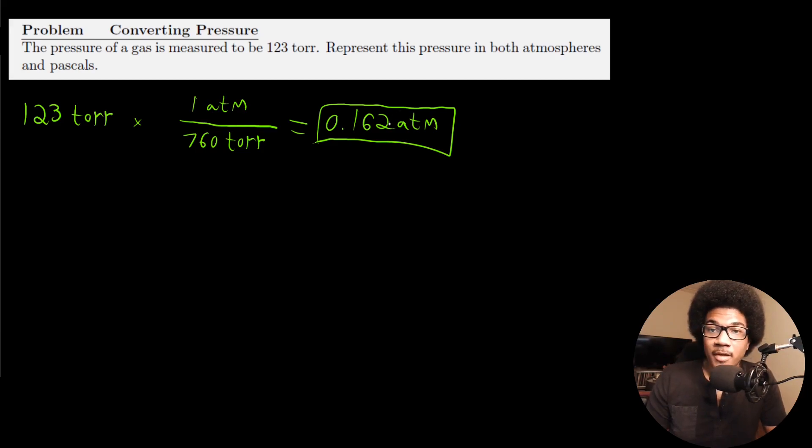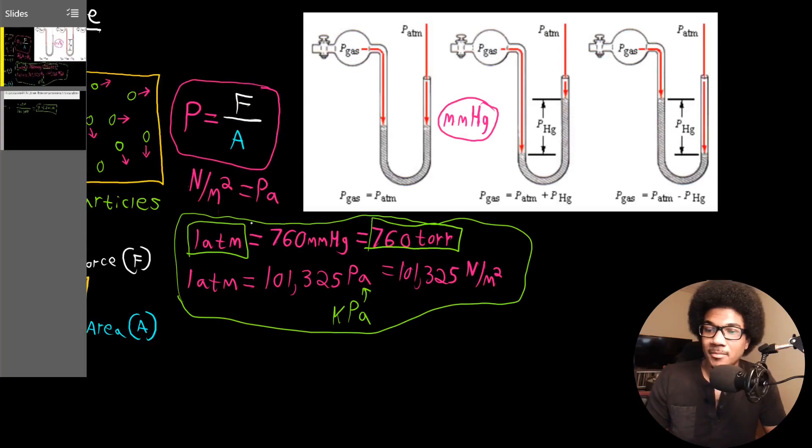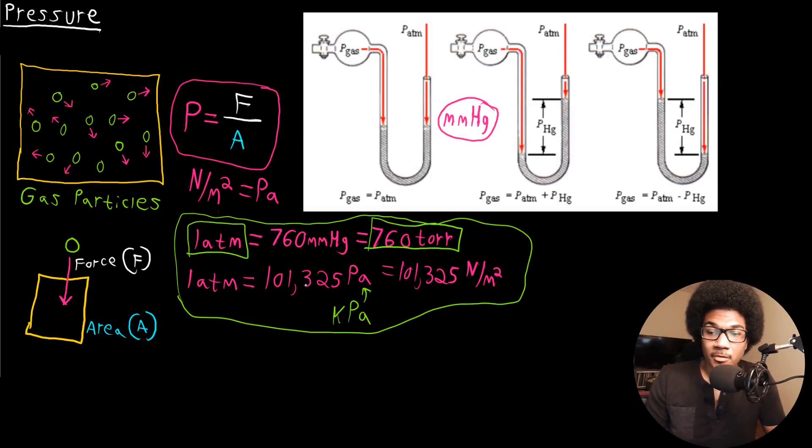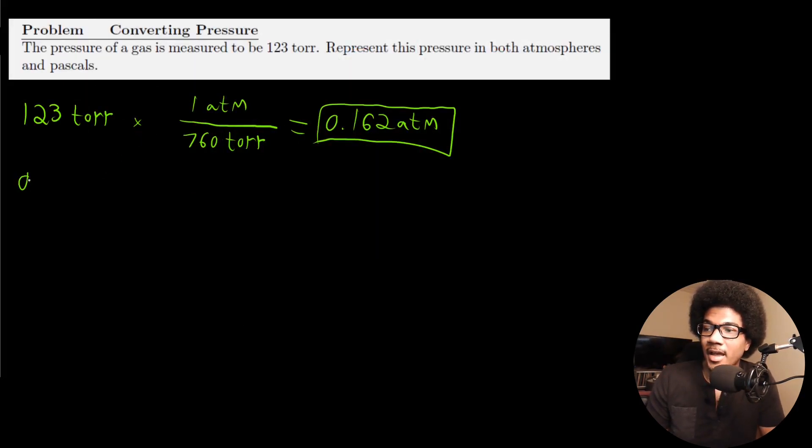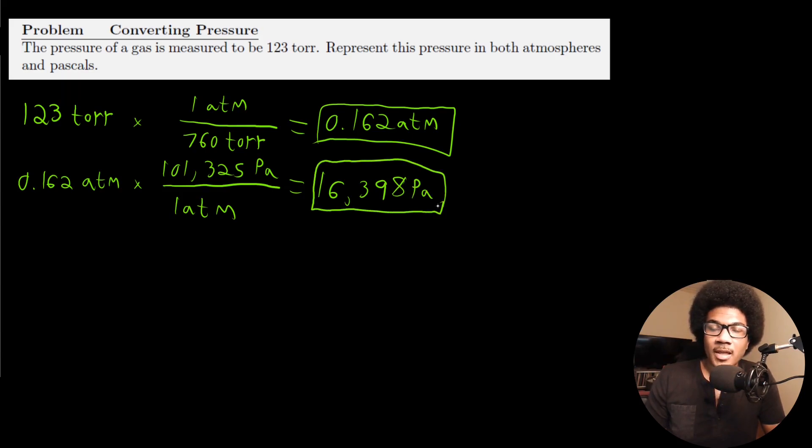Now that we have this pressure in atm, we can also convert to pascals. So we know that one atm is 101,325 pascals. So we can use that conversion factor here to convert to pascals. So 0.162 atm times for every one atm, you have 101,325 pascals. So that would give you 16,398 pascals. So that effectively converts that pressure from Torr to atm and to pascals.